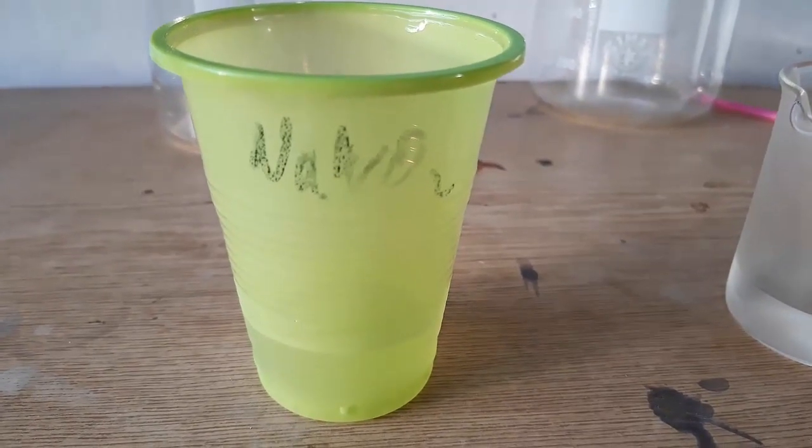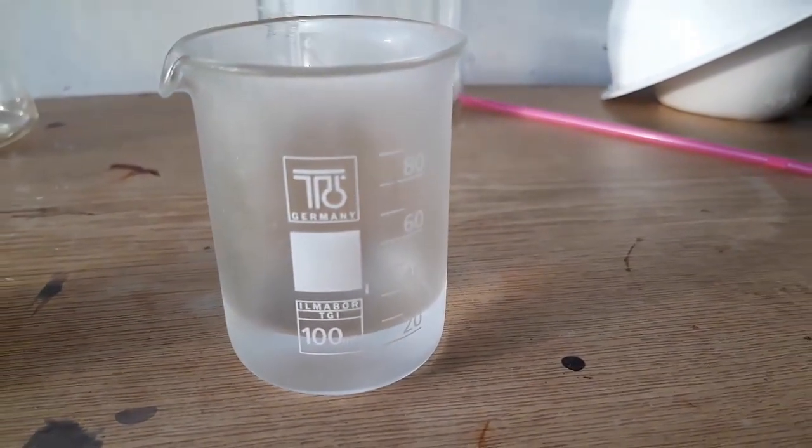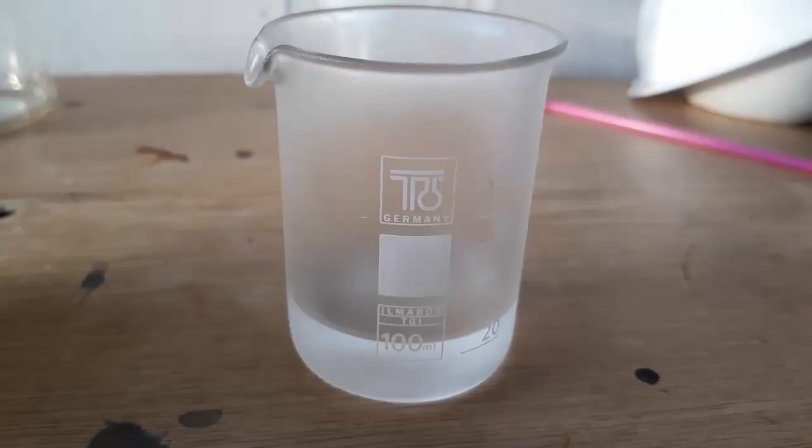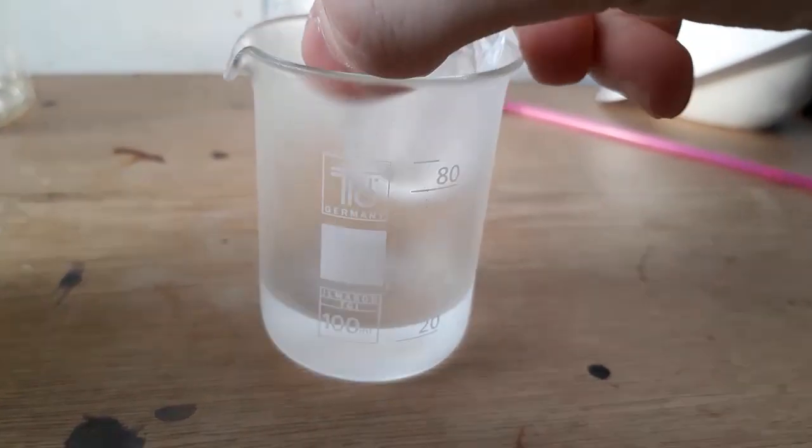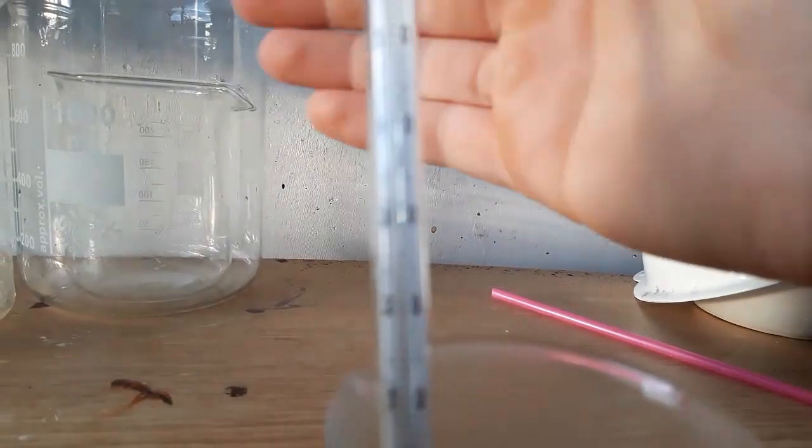We put both beakers in the fridge and cool them down to about 5 degrees Celsius. We add an ice cube for good luck. The temperature is at a solid 5 degrees.